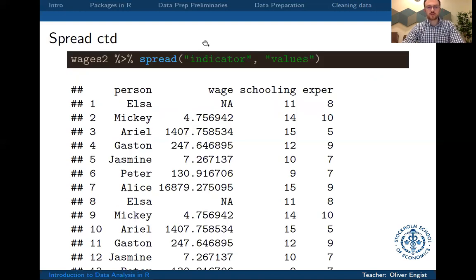So what we do is we use the function spread and the first argument that it takes is the indicator which is the column that tells us what is the variable that is stored in the next column, and the second column tells us which column contains the values for which indicator tells us what this value is.